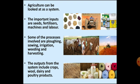Agriculture is a productive system. The inputs of the agricultural system are seeds, fertilizers, machinery like seed drillers, tractors, harvesters, threshers, etcetera, and labor. The processes or operations involved in this system are ploughing, sowing, irrigation, weeding and harvesting. And the outputs are crops, wool, dairy and poultry products.